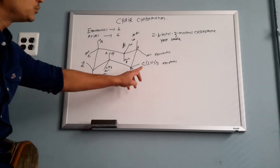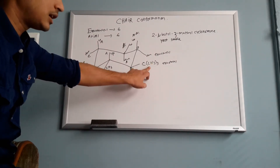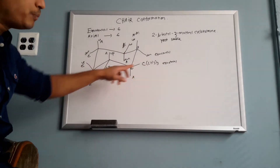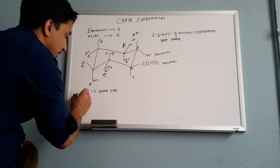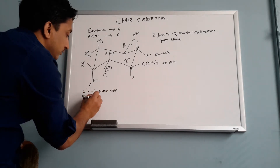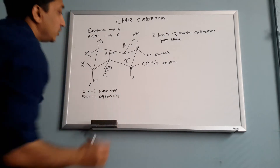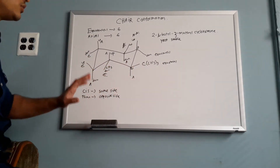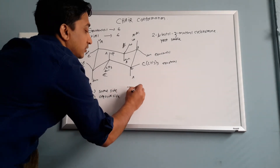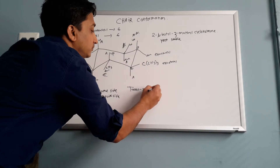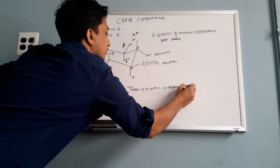Look at this. Your substituent — this one is going up, up. This one is going down. Opposite sides. Cis means same side; trans means opposite side. So one substituent is going up and one is going down — your two substituents are on opposite sides. That's why this one is named trans: trans-2-t-butyl-3-methyl cyclohexane.